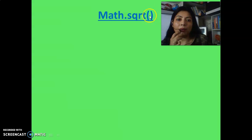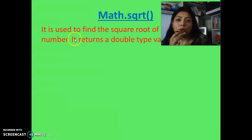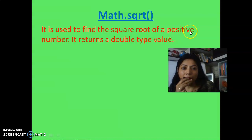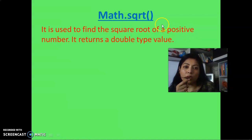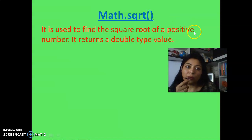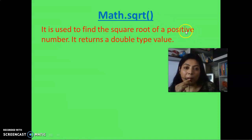You provide the number within brackets and it returns the square root of that number. It is used to find the square root of a positive number — your number should be a positive number. If you give any negative number then it shows an error. In ICSC, that type of question comes asking what will be the output; if a negative number like minus 5 is given, you have to write down that it's showing an error, because the square root of a negative number is not possible.